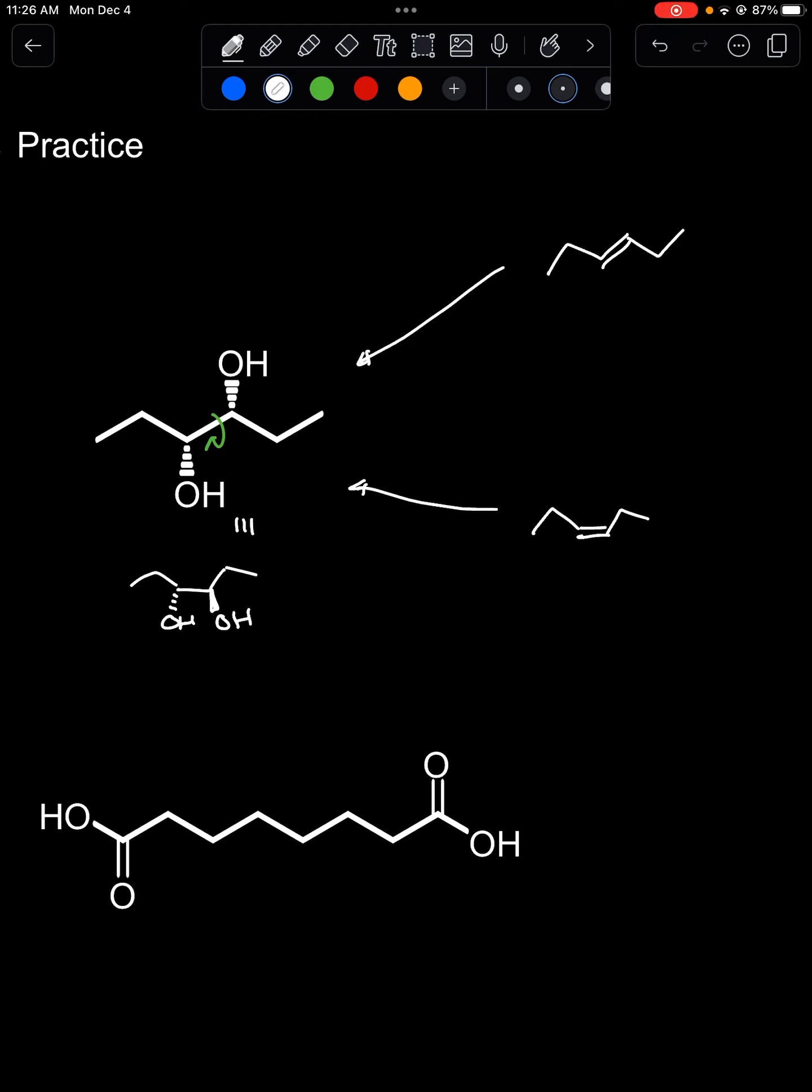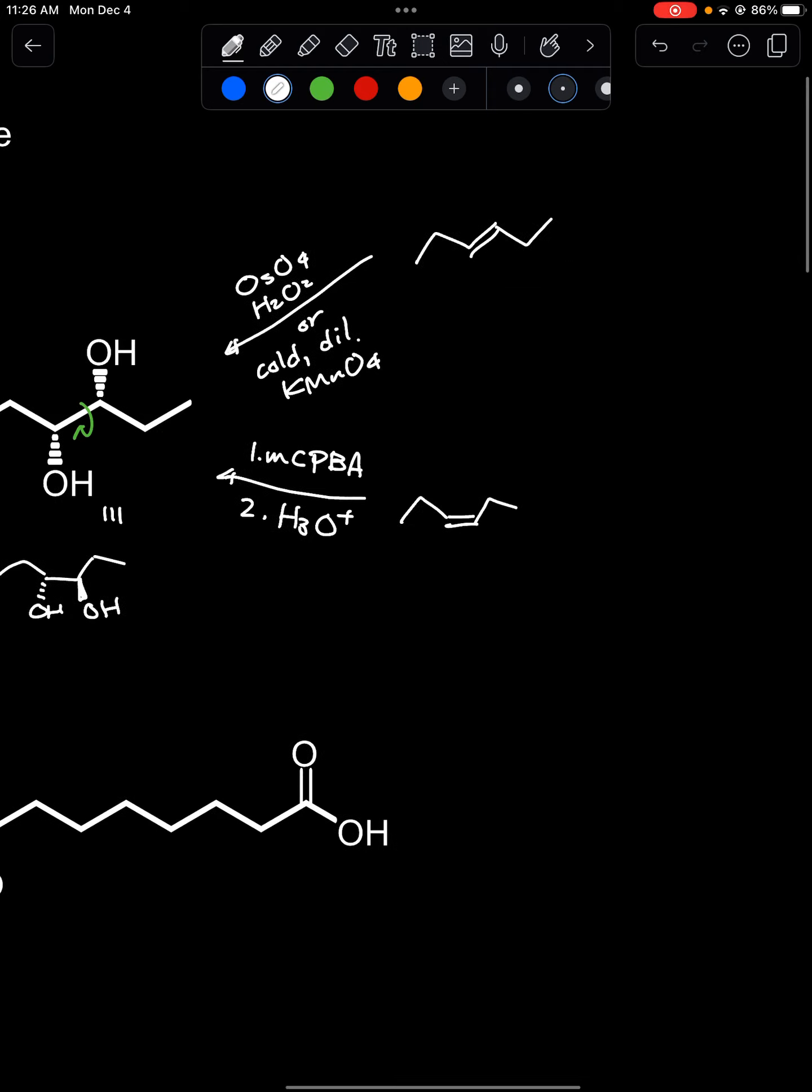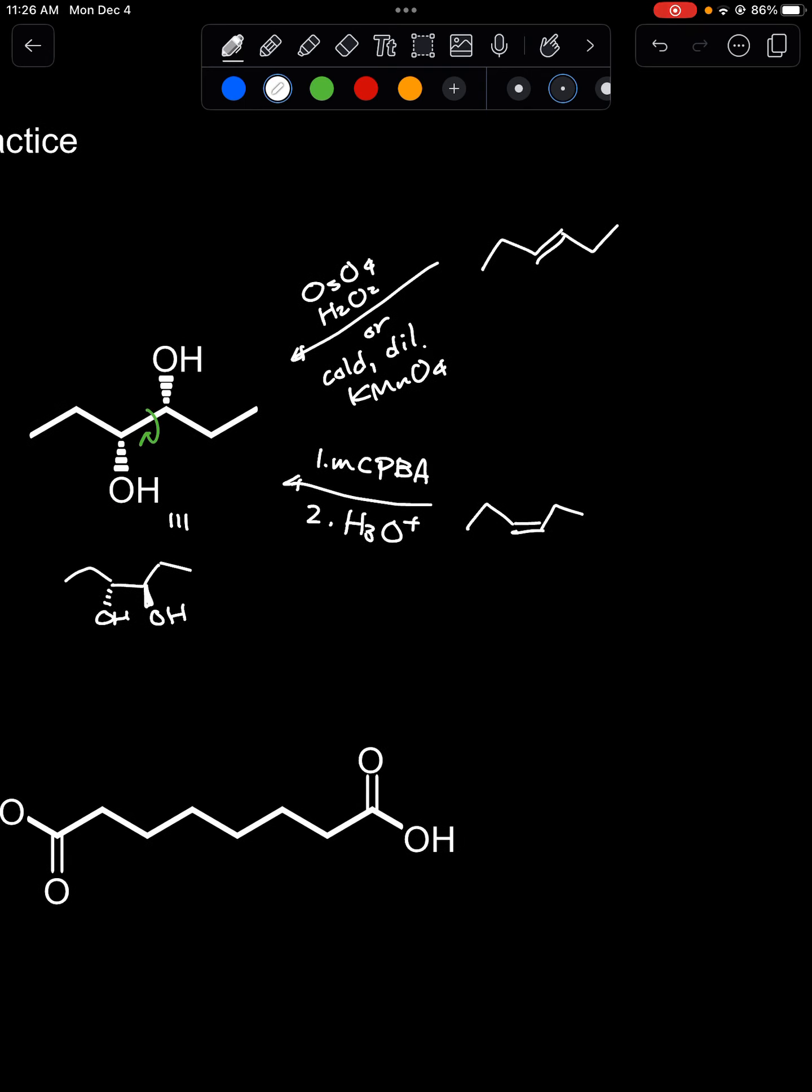To do the syn dihydroxylation remember you need something like osmium tetroxide and hydrogen peroxide or you could do cold diluted potassium permanganate. To do the anti-dihydroxylation you would need to first make an epoxide and then open that up with a strong acid catalyst in water and that would give you the anti. If you do that from cis you would end up with the same product.